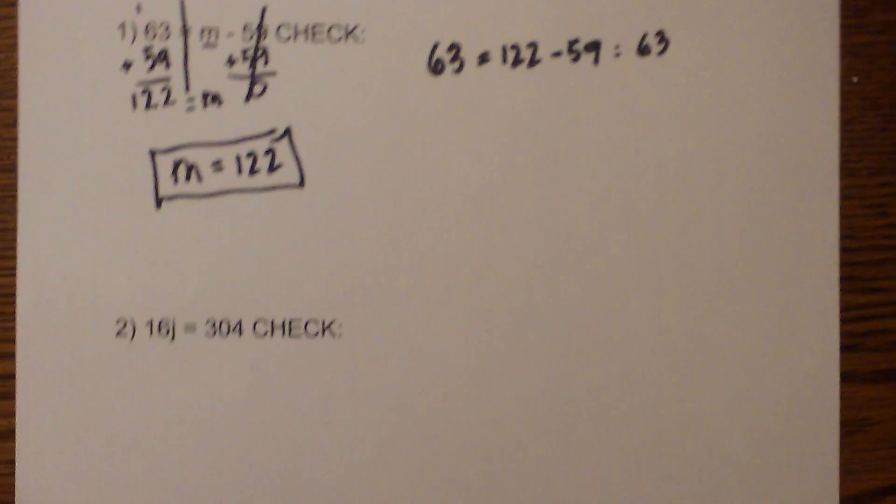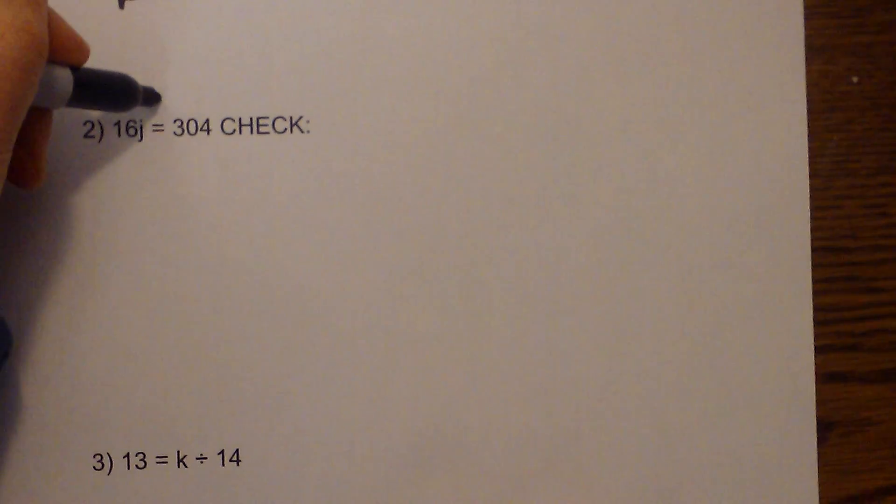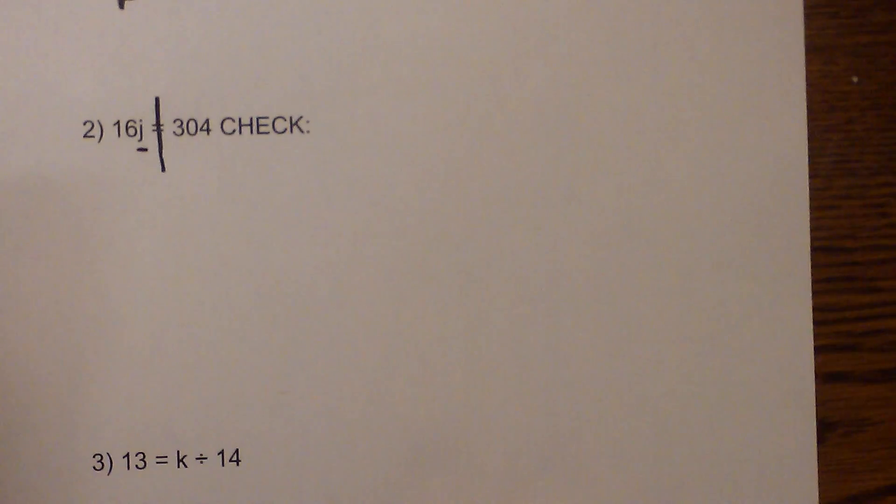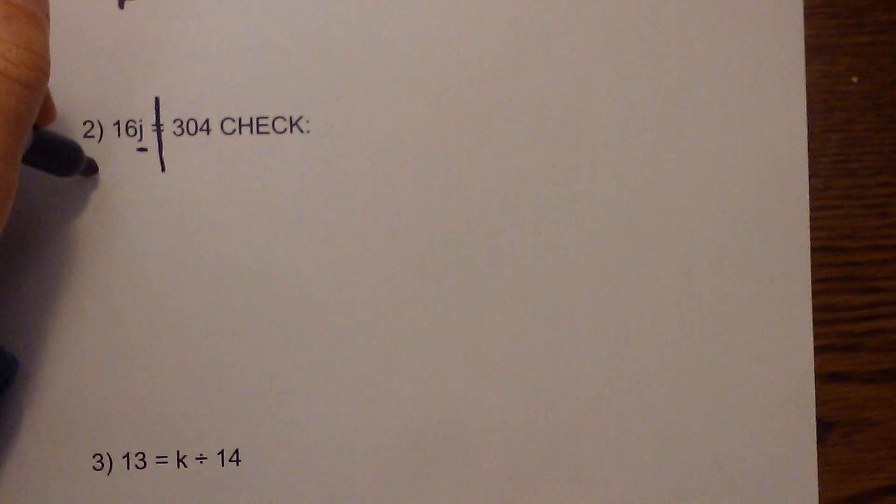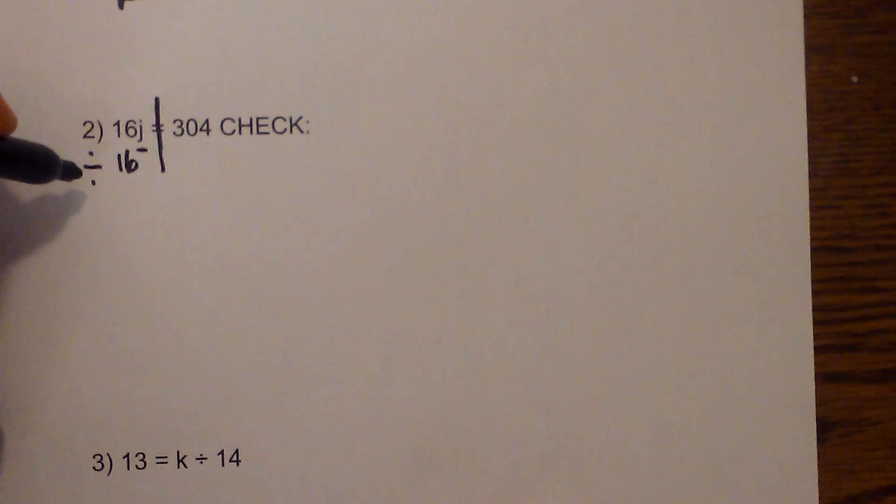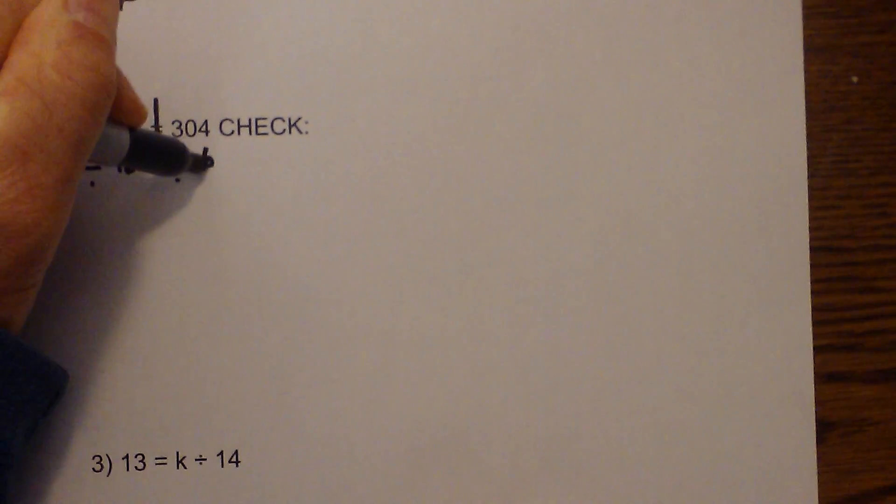Next let's go one with multiplication. Okay so step one I'm going to draw a line down the middle. I have identified the variable which is j and the operation is multiplication so I need to divide each side by 16. Okay and so that will be 304 divided by 16.